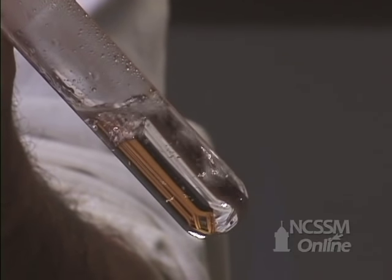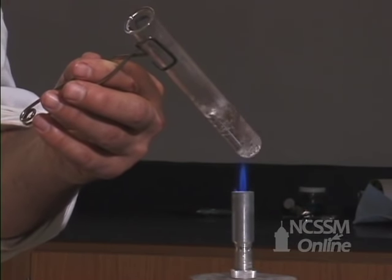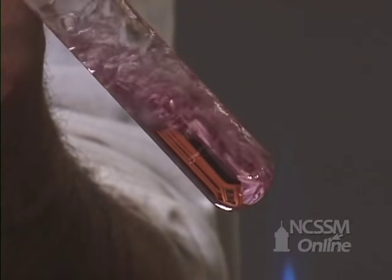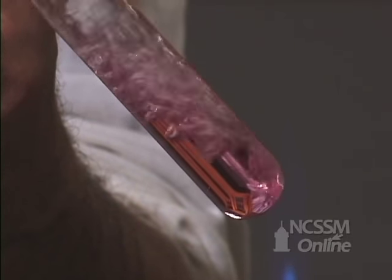In order to demonstrate that we're getting a reaction, we'll add some phenolphthalein to the test tube. The solution will turn purple due to the formation of magnesium hydroxide.